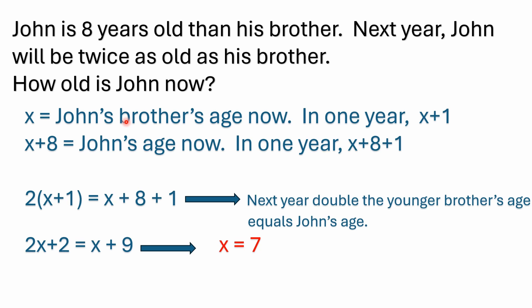And then what are we looking at? We're looking into the future — one year into the future. So that means John's brother in one year would be x plus one years old. So we kind of know that relationship now. If John's brother is x years old today, he'll be x plus one years old in a year.